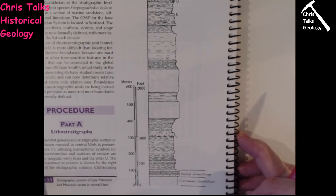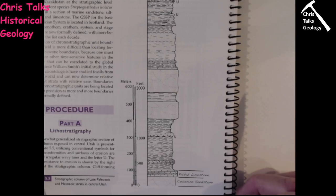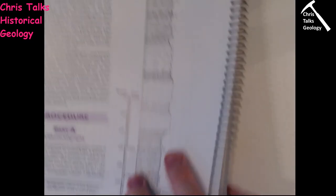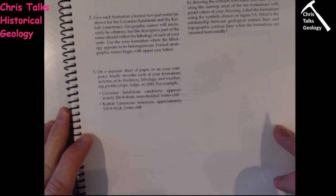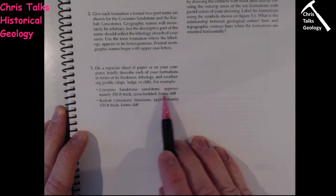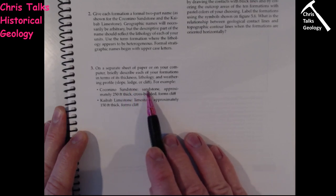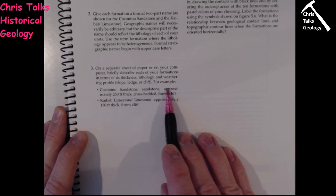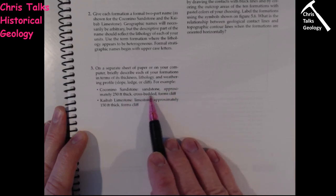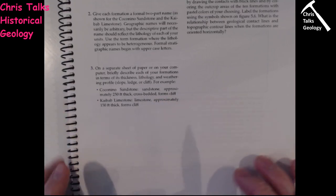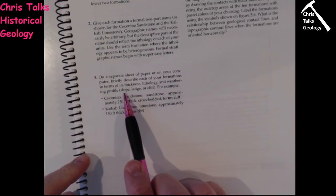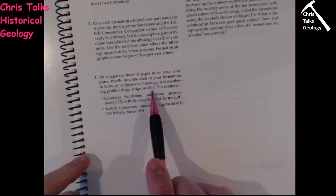The final part of part A is to produce a list briefly describing each formation. For each formation you'll do a bullet point with the formation name, what it's made of, how thick it is, any geologic structures present — for instance, crossbeds in sandstones — and whether the rock layer forms slopes, ledges, or cliffs. For example, the Kaibab Limestone is a limestone layer about 150 feet thick that forms a cliff.